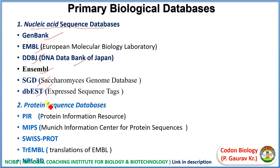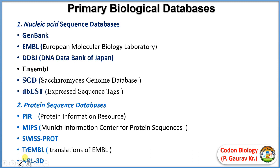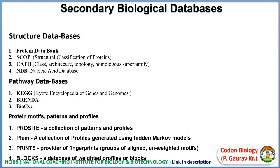Another primary database category is protein sequences. These include PIR — Protein Information Resources — MIPS (Munich Information Center for Protein Sequences), SwissProt, and TrEMBL. TrEMBL is the translation of EMBL — meaning EMBL is the nucleic acid database and TrEMBL is its protein database counterpart. Another is NRL-3D. These are the primary biological databases.